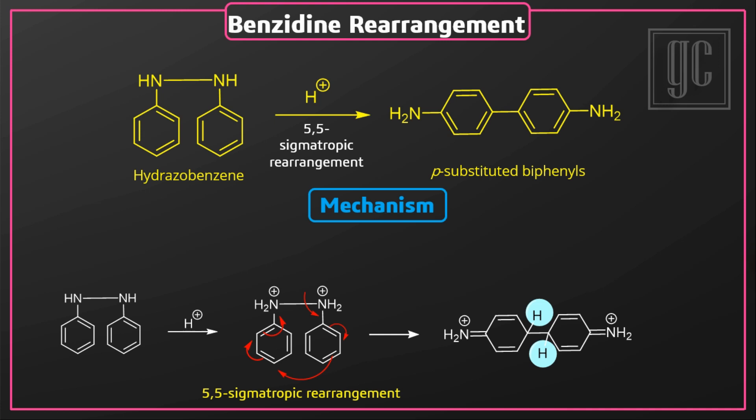In this intermediate, the aromaticity of the benzene rings is lost. To re-establish aromaticity, one hydrogen atom is removed from the sp3 carbon atoms. The bonding electrons are then shifted toward the rings and the final product, para-substituted benzidine, is formed.